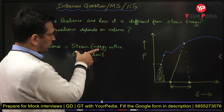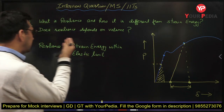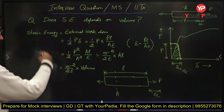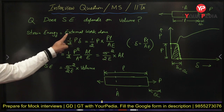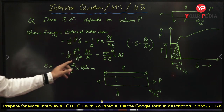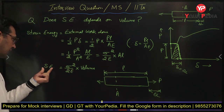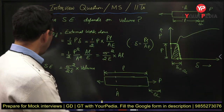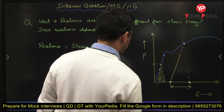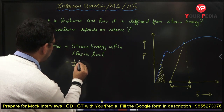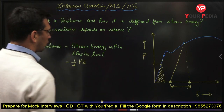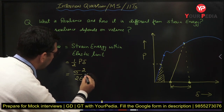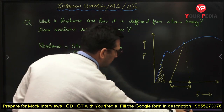Whatever strain energy formula you get within the elastic limit is basically the formula for resilience. I can write it as: half of P into delta — this is the external work done, or the strain energy stored within the elastic limit, which is resilience. And finally the formula we obtained is sigma squared divided by 2E, multiplied by volume. That is the formula I explained in the earlier video, and that applies here as resilience.